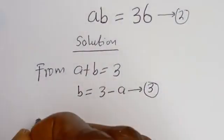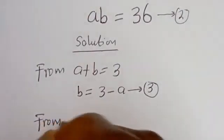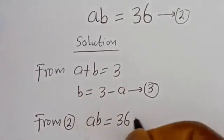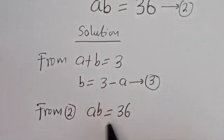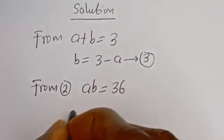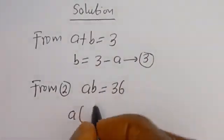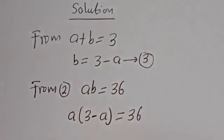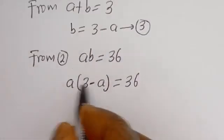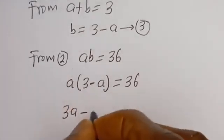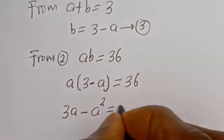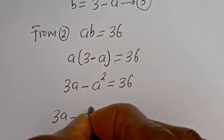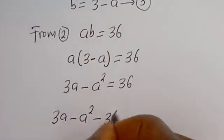Also from equation 2, a times b is equal to 36. Now let's substitute for b. We have a times (3 minus a) is equal to 36. Now let's open the brackets: a multiplied by 3 is 3a, minus a times a is a squared, is equal to 36.